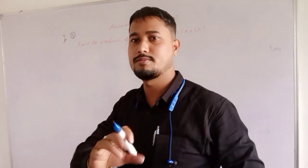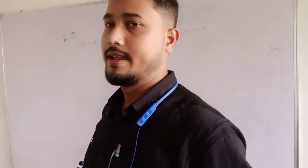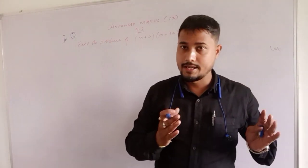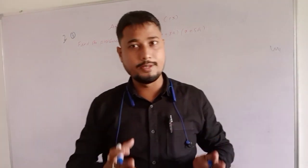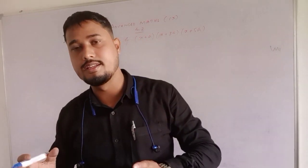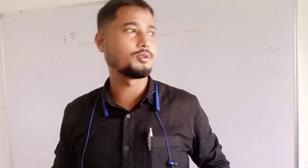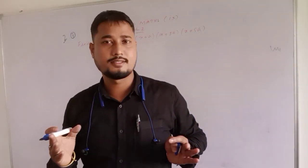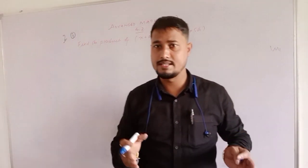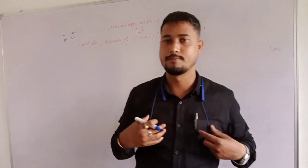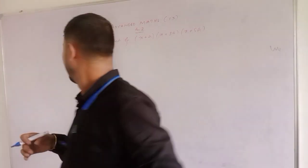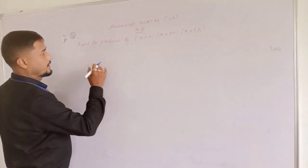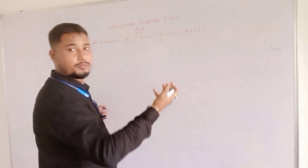The formula for x plus a into x plus b into x plus c is: x cube plus a plus b plus c into x square plus ab plus bc plus ca into x plus abc. Then we can write according to this formula.